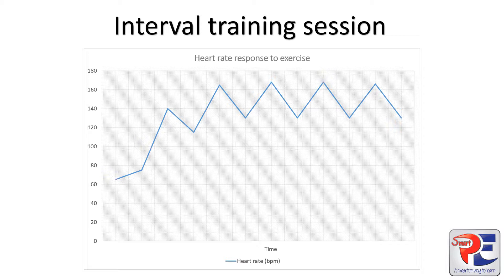Let's quickly break down this graph. On the Y axis, which goes top to bottom, we have heart rate measured in beats per minute, and on the X axis, which goes from left to right, we have time.